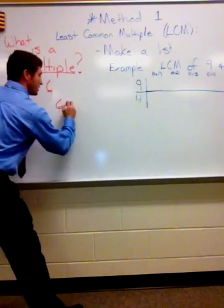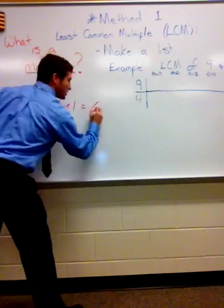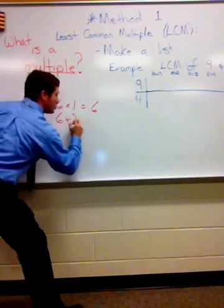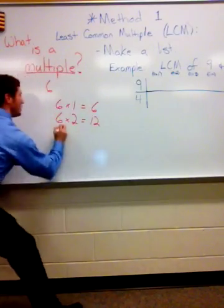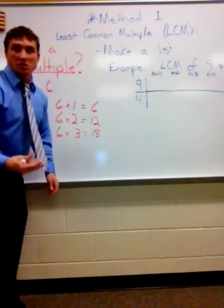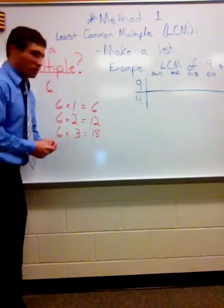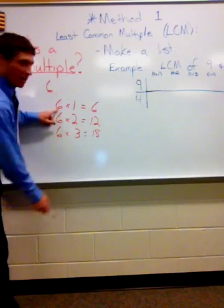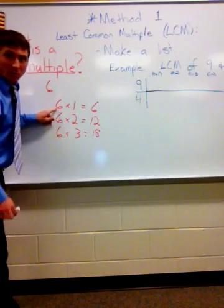six. I have six times one equals six, six times two equals twelve, six times three equals eighteen, and the list goes on. Those are all multiples. We took a whole number, six, and multiplied it by another whole number, nonzero, like one, two, three, four, and those give us multiples.